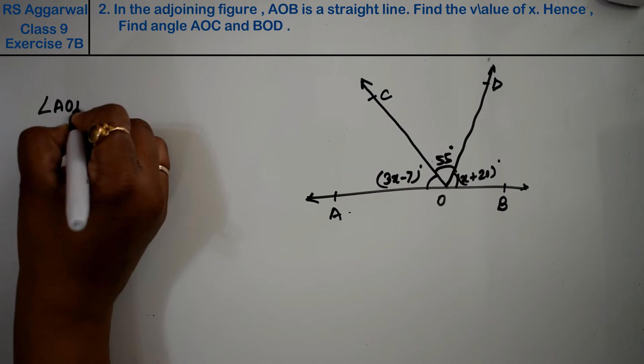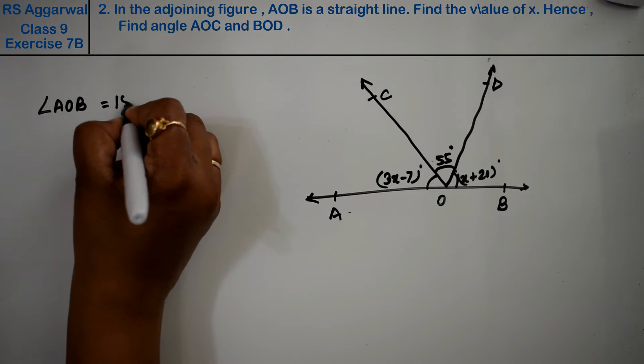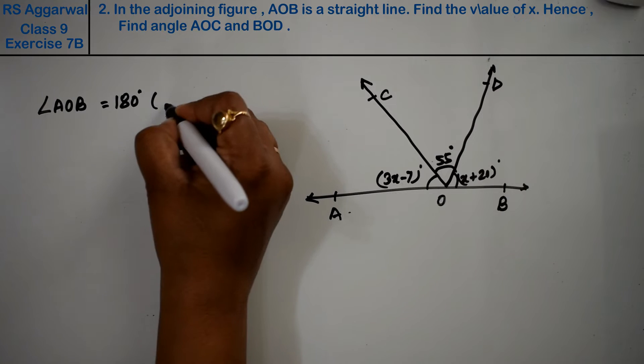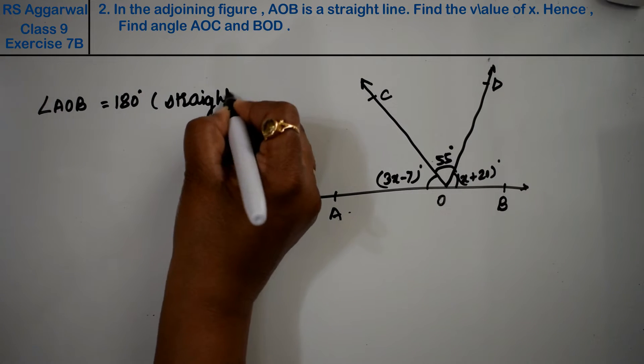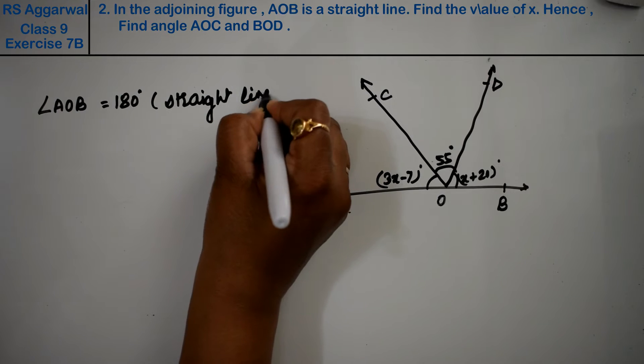So angle AOB becomes 180 degrees, because when it's a straight line, it becomes 180 degrees. In brackets you should write that it is 180 degrees because it is a straight line.